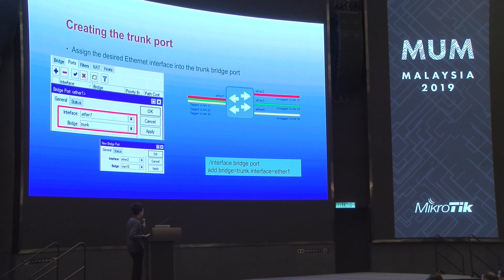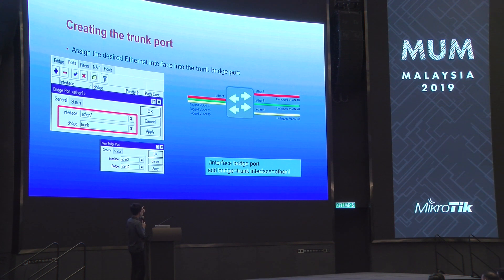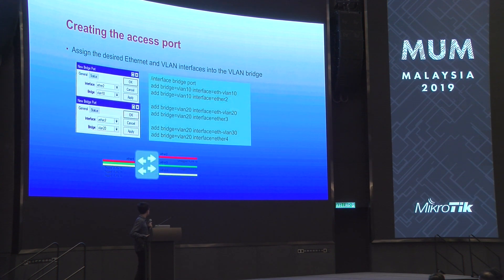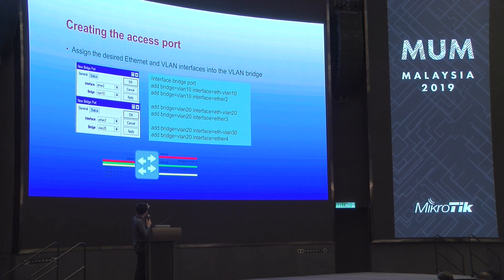Next, create the trunk port. After assigning the VLAN ID to the access, we must add the trunk port into the bridge. As seen here, the trunk port is the Ethernet interface — we make a trunk bridge and add Ethernet 1 into the trunk bridge. Then create the access ports: assign each VLAN to an interface — Ethernet 2 to VLAN 10, Ethernet 3 to VLAN 20, and Ethernet 4 to VLAN 30.